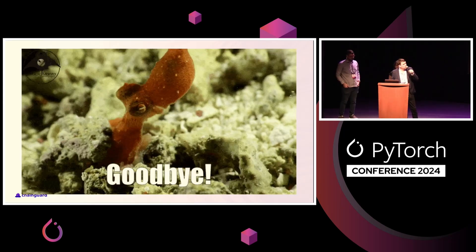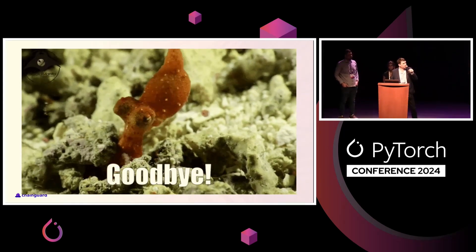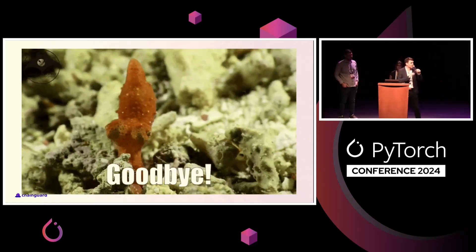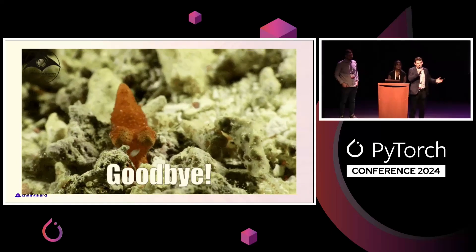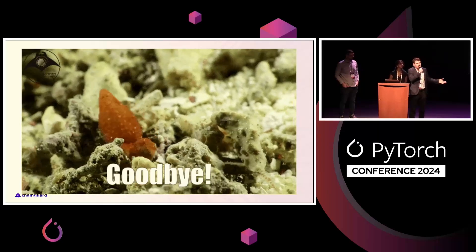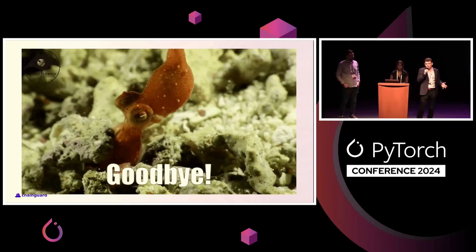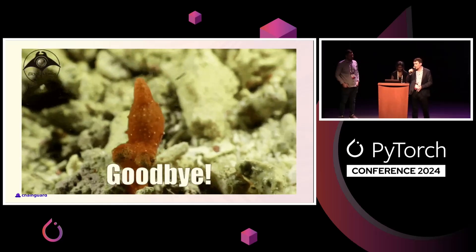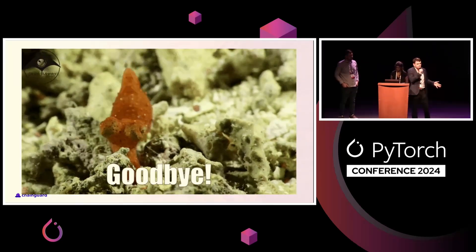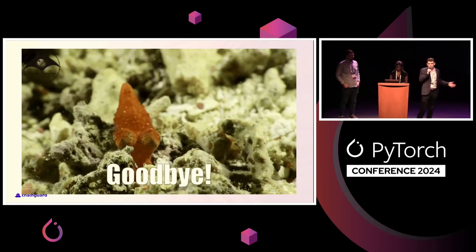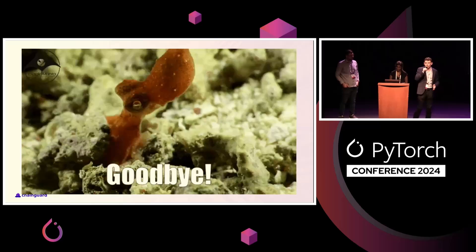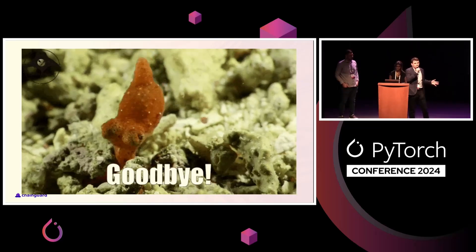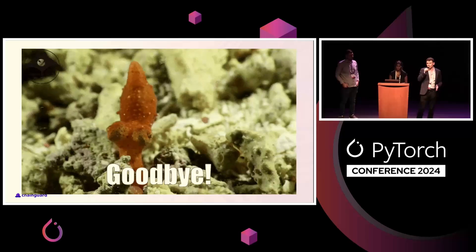Before we get to questions, the techniques we've discussed — building fresh, going from five-week cycles to nightly builds, including SBOMs, going minimal — are all things that could be applied to the current PyTorch image to make it more secure. That could really affect security in production environments around the world. Thank you.